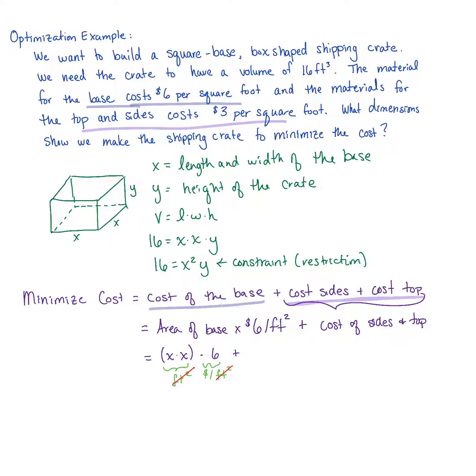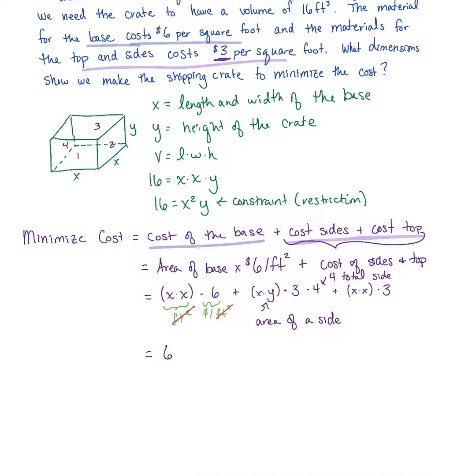We can do a similar thing for the sides and the top. We've got x times y, that's the area of a side, times $3 per square foot. But we have four total sides, so we multiply it by 4, plus we've got our top which has area x times y but using that $3 per square foot versus our $6 per square foot.